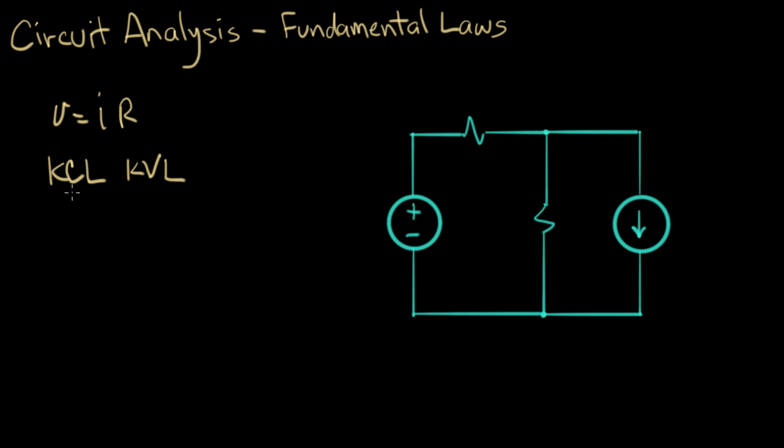This says that the sum of all the currents going into a node adds up to zero. And the voltage law says the sum of the voltages going around a loop adds up to zero. And the other thing we learned was the sign convention.